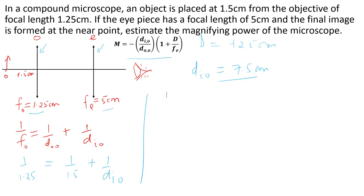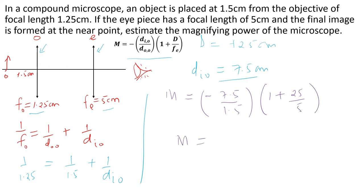We can now calculate magnification: negative of d_image_objective (7.5) divided by d_object (1.5), multiplied by (1 plus 25 divided by focal length of the eyepiece, which is 5). This gives us negative 30. The magnification produced is 30, and the negative sign means the image is inverted.